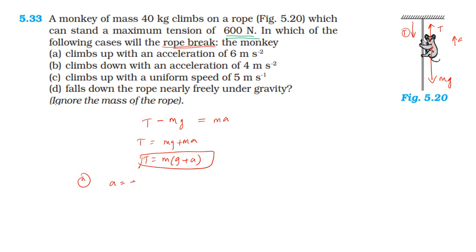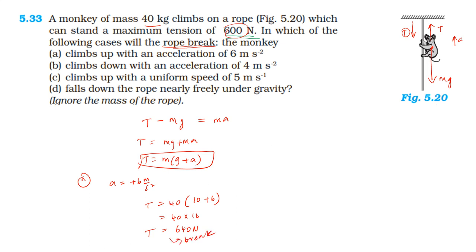In Case 1, climbing up with acceleration 6 m/s² upward, the tension T equals mass of monkey into (g plus a). The mass is 40 kg, giving T equals 40 into (10 plus 6) equals 40 into 16 equals 640 N, which exceeds 600 N, so the rope breaks.